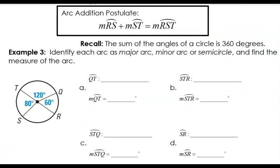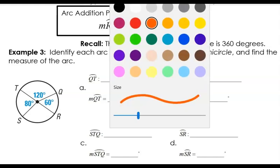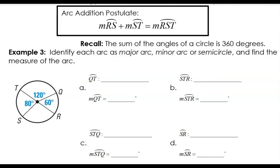Remember when we had an angle addition postulate or a segment addition postulate? It said if you know two little pieces, you can add them up and get the great big piece. The same is true of the arcs. So if I'm trying to find an arc, I can add up the little pieces and get the big measurement. Also, going all the way around the circle is going to be 360 degrees. So if I'm missing a piece, I could add up those pieces and subtract from 360 to find it.